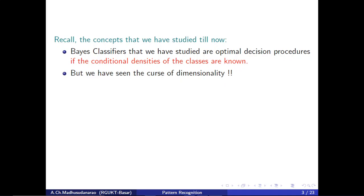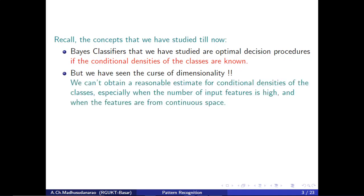But we have seen the curse of dimensionality. It's not so easy to find class conditional distributions with the help of that limited training data we are having. We are going to have very limited training examples. With that limited training examples, approximating the joint probability density function is not so easy — it's very hard.